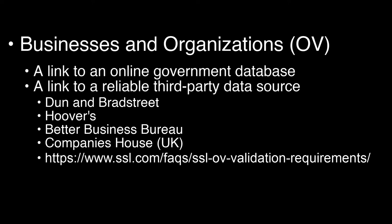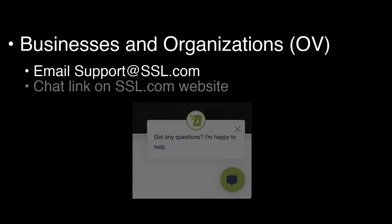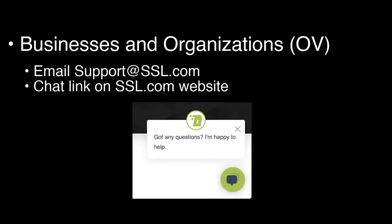You can also check the URL on the screen for a longer list of example reliable data sources that may be used to confirm the company information. In most cases, businesses and organizations will not need to upload documents to their order, but can simply provide a URL to SSL.com support staff. You can submit your link via an email to support@SSL.com or by using the chat link in the lower right corner of the SSL.com website. SSL.com may request additional documentation for some orders.